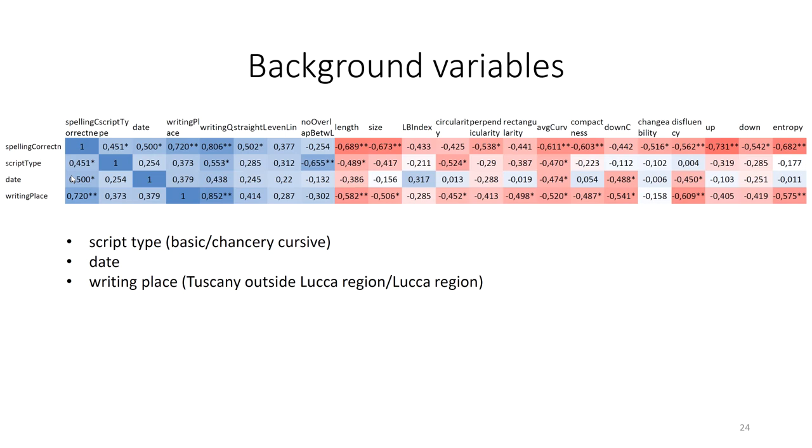In addition to handwriting variables, there are also some important background variables that correlate with spelling correctness. They are surely responsible for part of the variation of the spelling correctness variable, which we have only attributed to the handwriting variables so far. So the background variables, writing place and date, will certainly make the picture more complete by showing the effect of the geographical and chronological context.